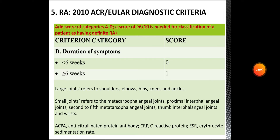The fourth category is duration of symptoms. If the duration of symptoms has been less than 6 weeks, you get a score of 0. If they have been greater than or equal to 6 weeks, you get a score of 1.